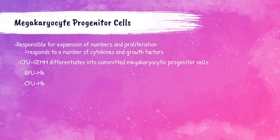The progenitor cell CFU-GEMM differentiates into BFU-MK and then CFU-MK — this is where it becomes committed to becoming a platelet. The developmental lineage for a platelet or thrombocyte is: hematopoietic stem cell → megakaryoblast → promegakaryocyte → megakaryocyte → mature thrombocyte, also called a platelet. The platelets pinch off of the megakaryocyte as cellular fragments and they have no nucleus.